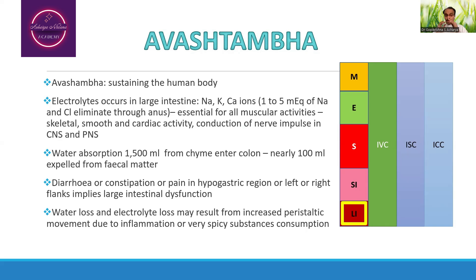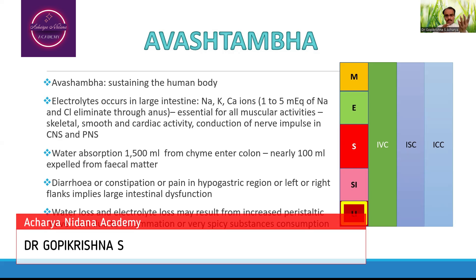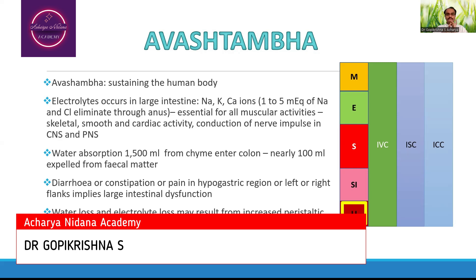The absorption of electrolytes takes place in the large intestine — that is sodium, potassium, calcium, and chloride. These ions are necessary for almost all activities: skeletal muscular activities, smooth muscular activities, cardiac muscular activities, and all neuronal activities in terms of both the central nervous system and peripheral nervous system.